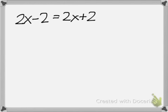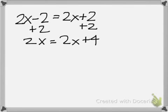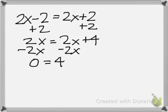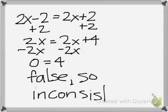Another example. 2x minus two equals 2x plus two. You can already see something's kind of wrong. We'll add two to both sides. We get 2x equals 2x plus four. Let's subtract 2x from both sides. We get zero equals four. Not true. So it's an inconsistent solution.